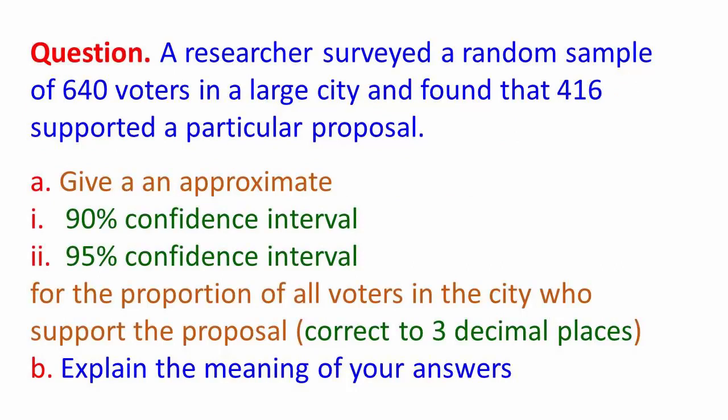So the question is, a researcher surveyed a random sample of 640 voters in a large city and found that 416 supported a particular proposal. We're going to give an approximate 90% confidence interval and an approximate 95% confidence interval for the proportion of all voters in the city who support the proposal, with answers correct to three decimal places. And more importantly, explain the meaning of your answer.